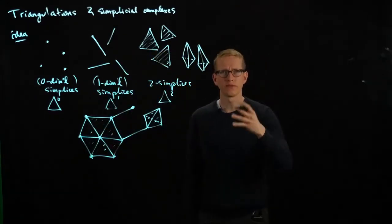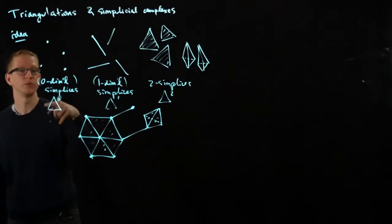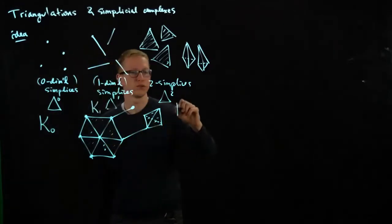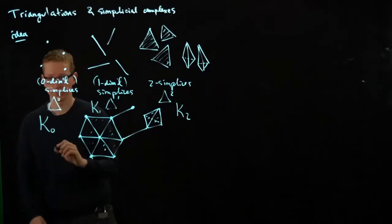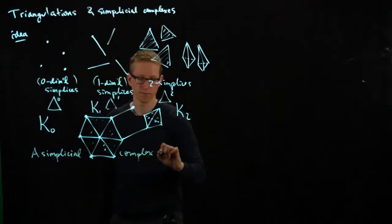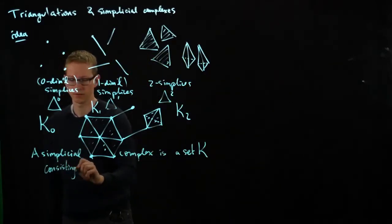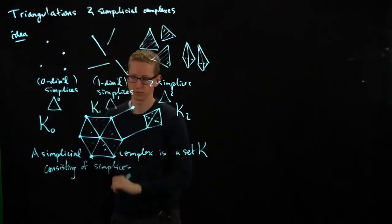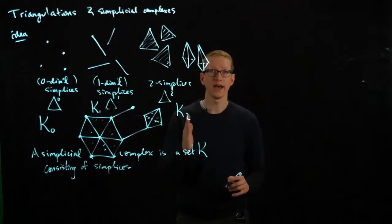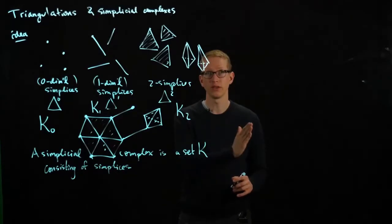It's best to understand this through examples rather than a formal definition. We denote the set of all zero-simplicies as K0, the set of one-simplicies as K1, two-simplicies as K2, and so on for the general simplicial complex. The dimension of the simplicial complex is the level at which no higher simplicies are included.